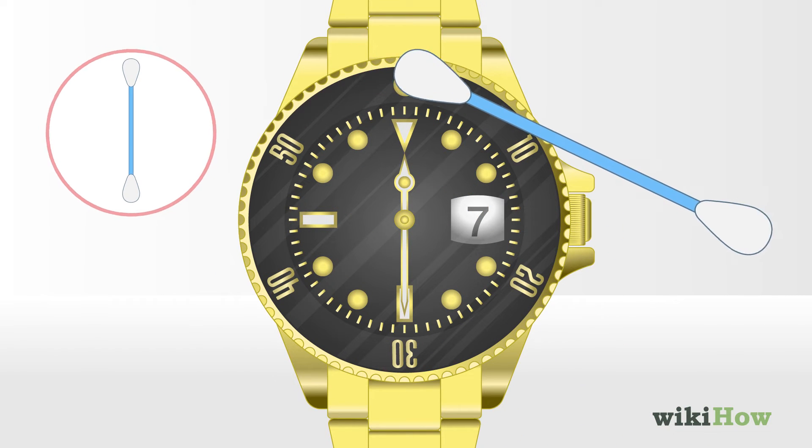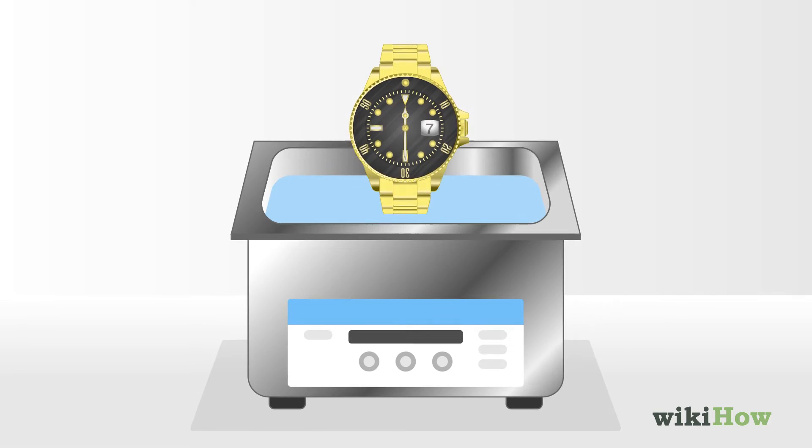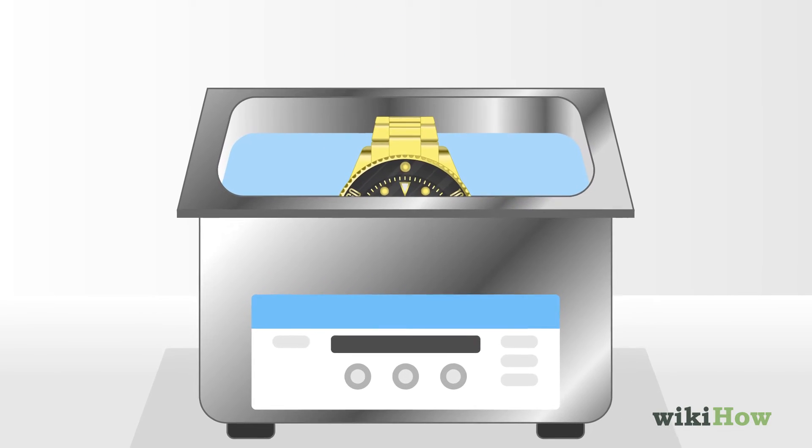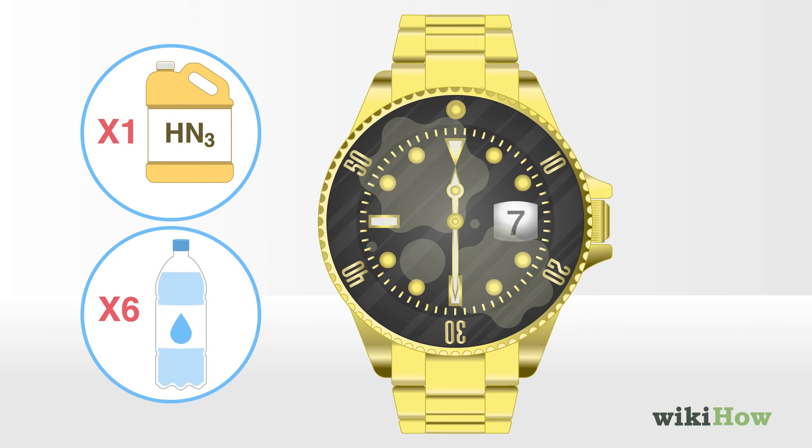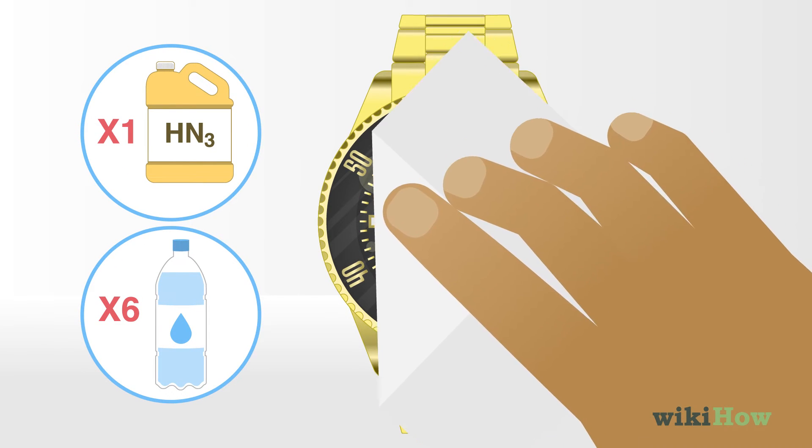For tougher stains, use a commercial jewelry cleaner that's safe for gold plating. You can also use a mixture of one-part ammonia and six-parts water to remove extra stubborn grime.